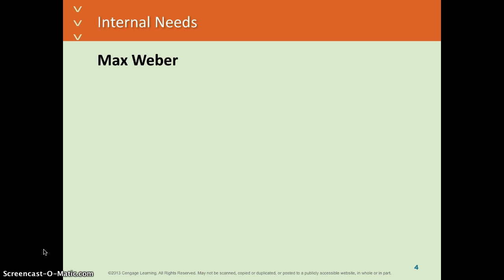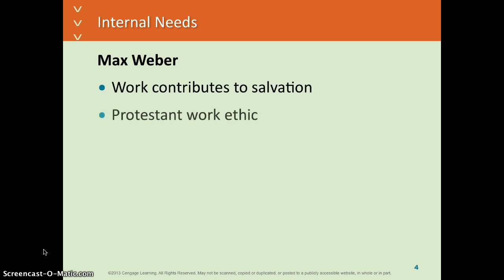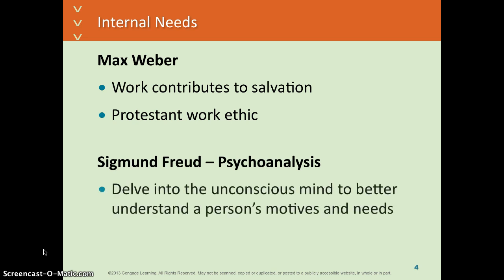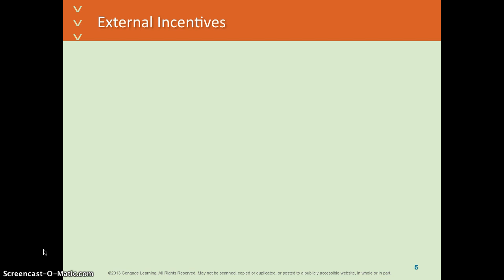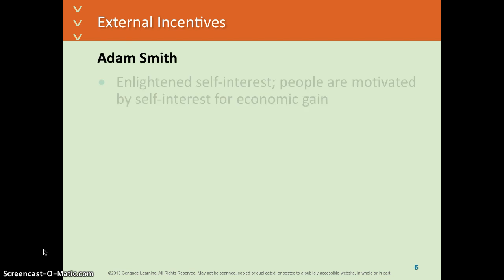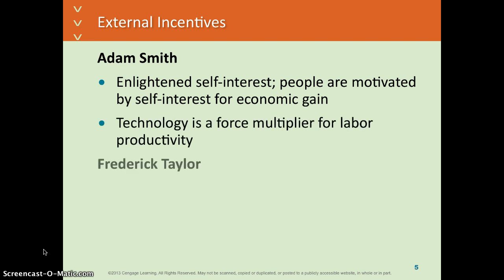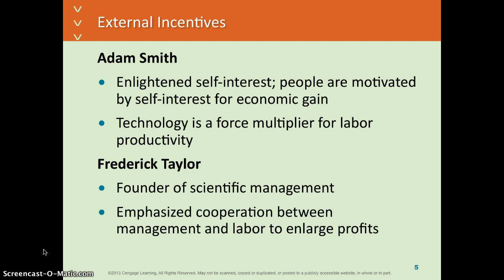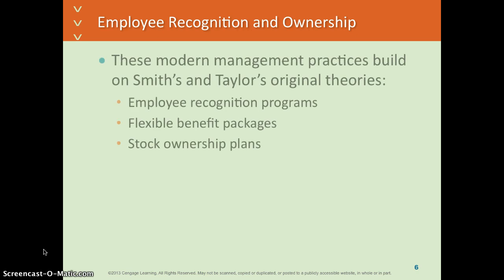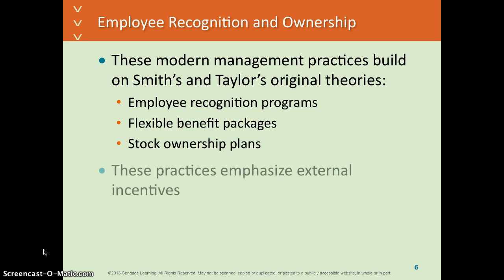Internal needs: Max Weber had a theory that worked with internal needs, as did Sigmund Freud with psychoanalysis. External incentives: Adam Smith talked about self-interest, and Frederick Taylor about cooperation between management and labor. Interestingly, a lot of the employee recognition programs we have in our companies today kind of go back to Smith and Taylor's original theories.